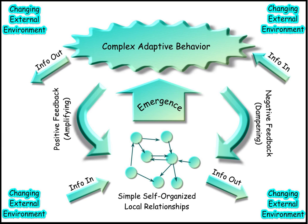A complex adaptive system is a system in which a perfect understanding of the individual parts does not automatically convey a perfect understanding of the whole system's behavior. The study of complex adaptive systems, a subset of nonlinear dynamical systems, is highly interdisciplinary and blends insights from the natural and social sciences to develop system-level models and insights.